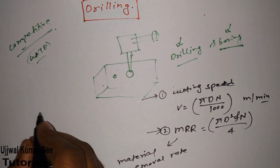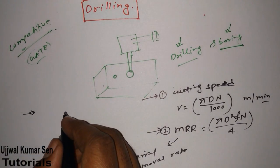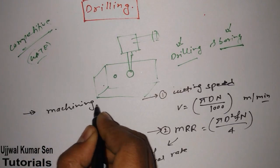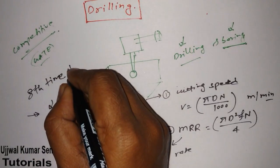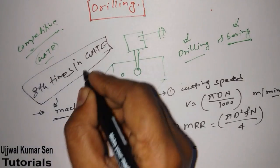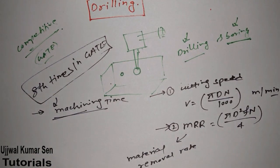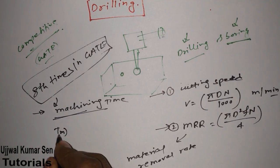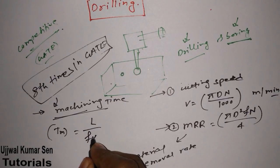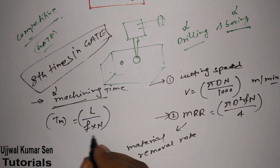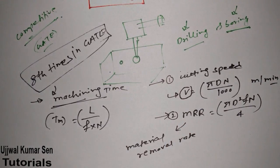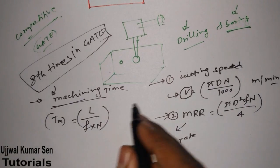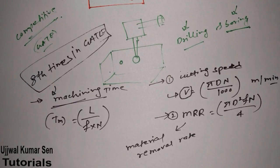The third and most important formula is machining time. This formula has been asked at least eight times in GATE exams. The formula for machining time is: tm = L / (f × N), where f is feed and N is RPM. They may give you speed and you have to find N from the cutting speed formula and then interlink the two.